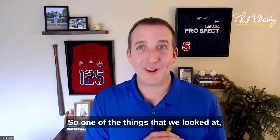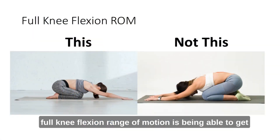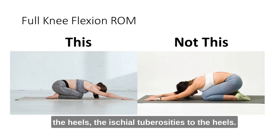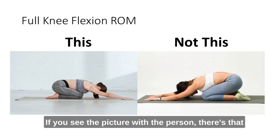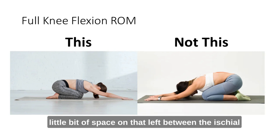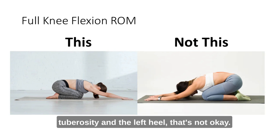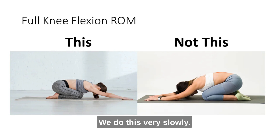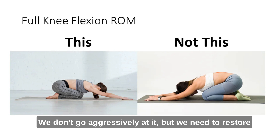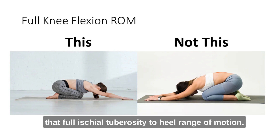One of the things I've talked about: full knee flexion range of motion means being able to get the ischial tuberosities to the heels. This position really helps me identify that. If you see that little bit of space between the ischial tuberosity and the heel on that left side, that's not okay. We should be restoring that fully — not necessarily at six weeks; it does take months. But they're not done with my care until they can do this. We do this very slowly, not aggressively, but we need to restore that full ischial tuberosity to heel range of motion.